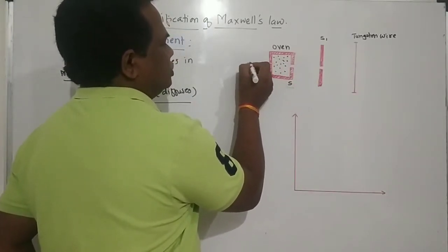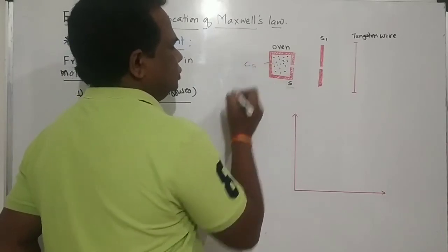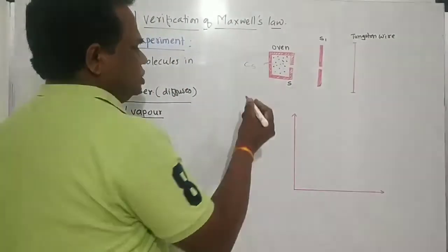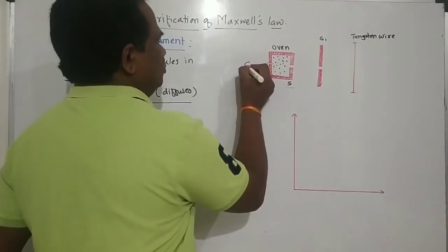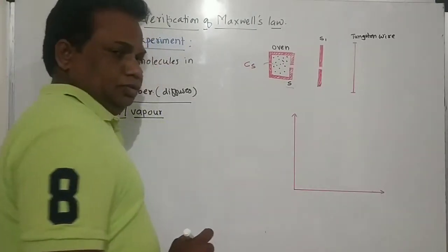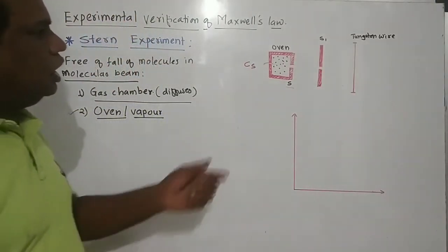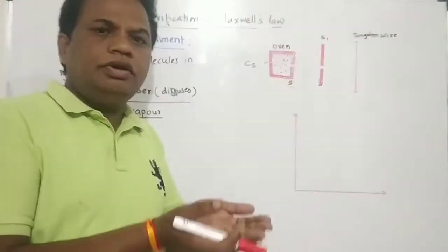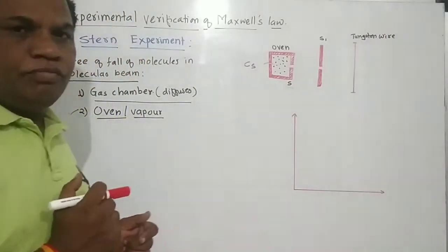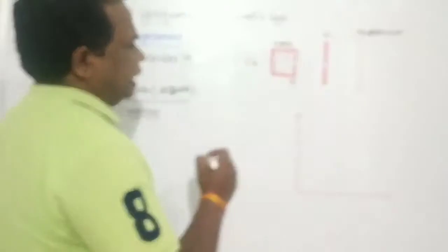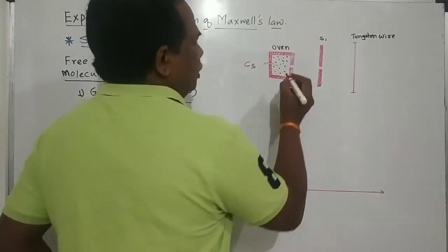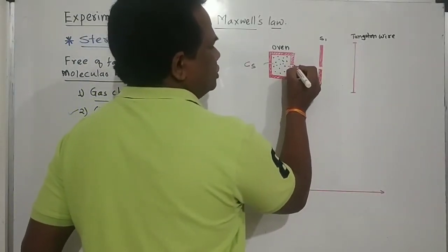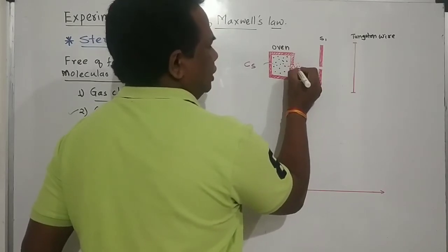The oven O1 consists of caesium material. The caesium is heated so that it begins to vaporize, producing vapours of the caesium atom through the small slit.